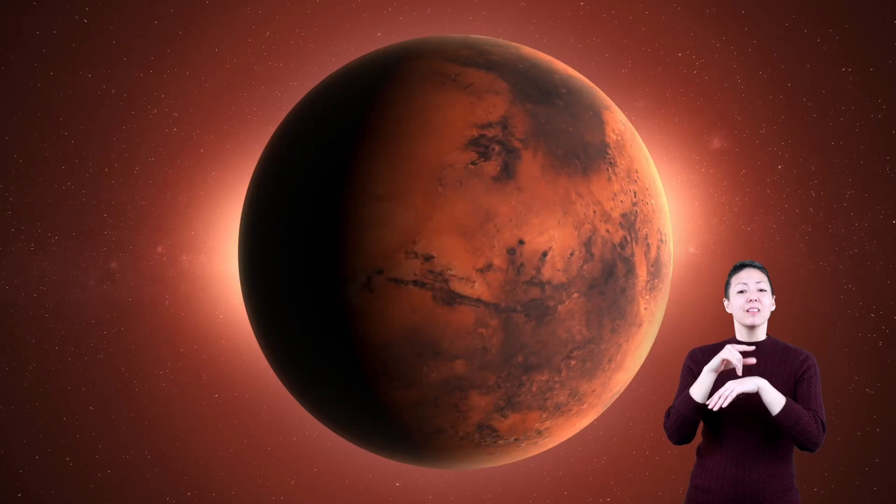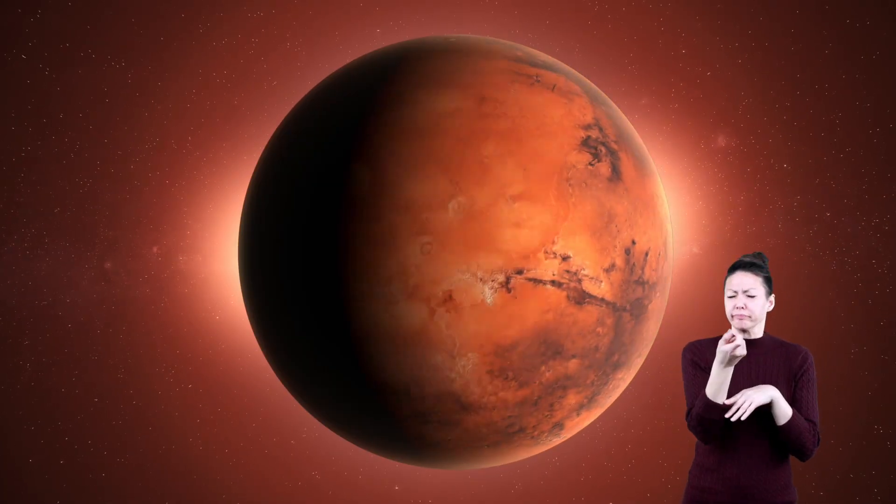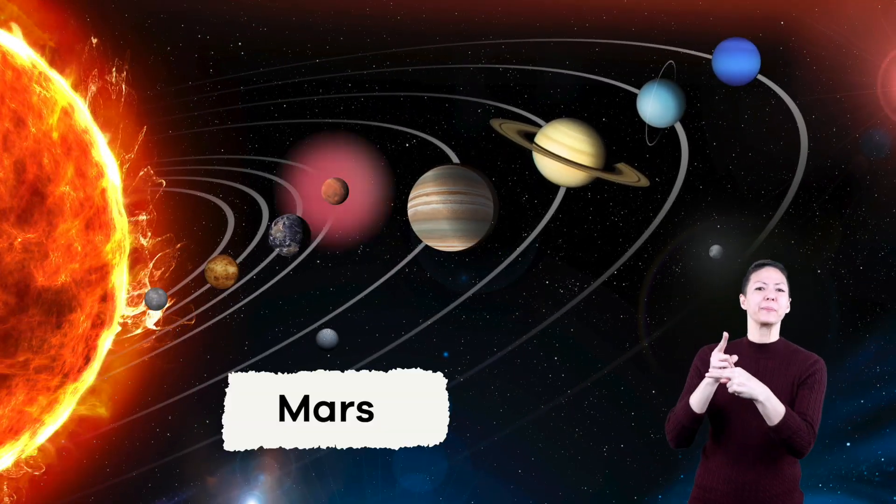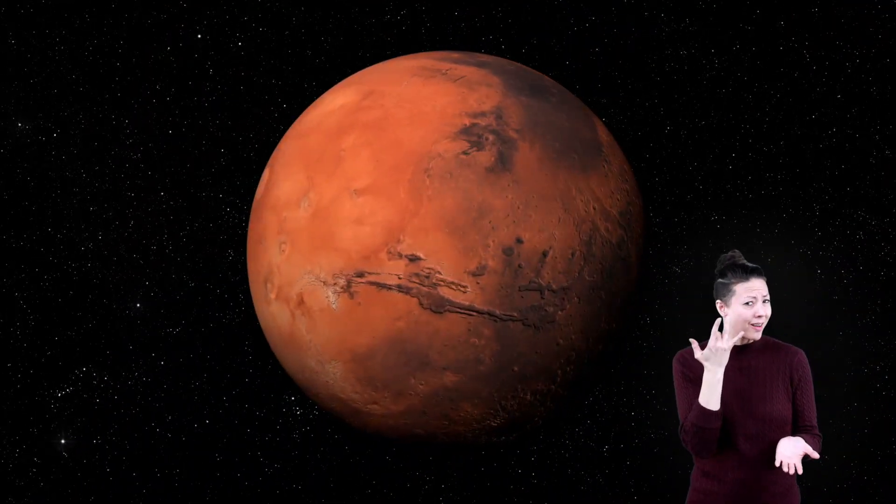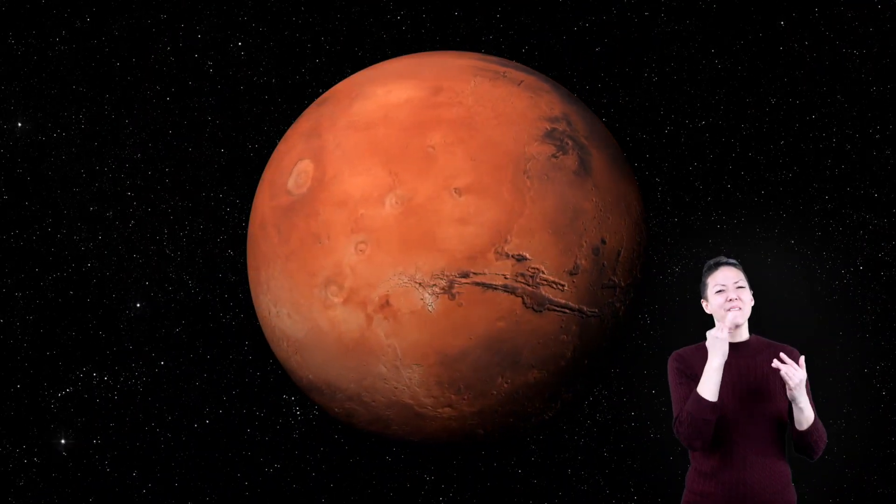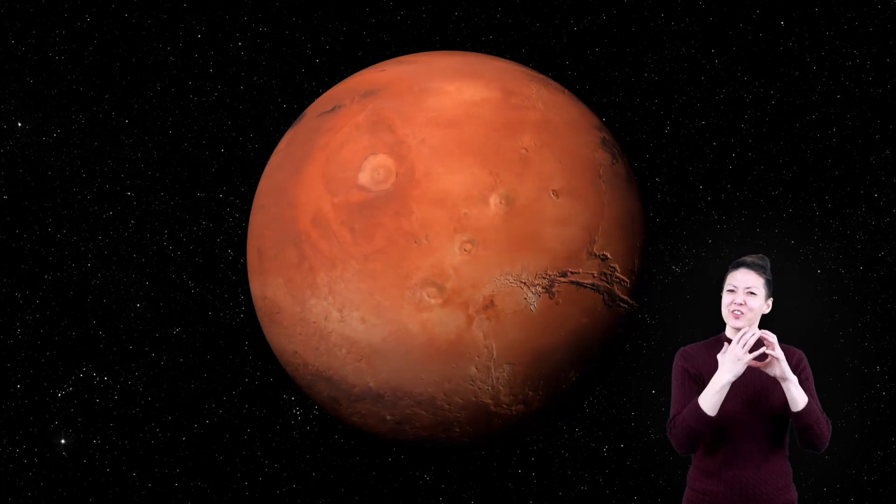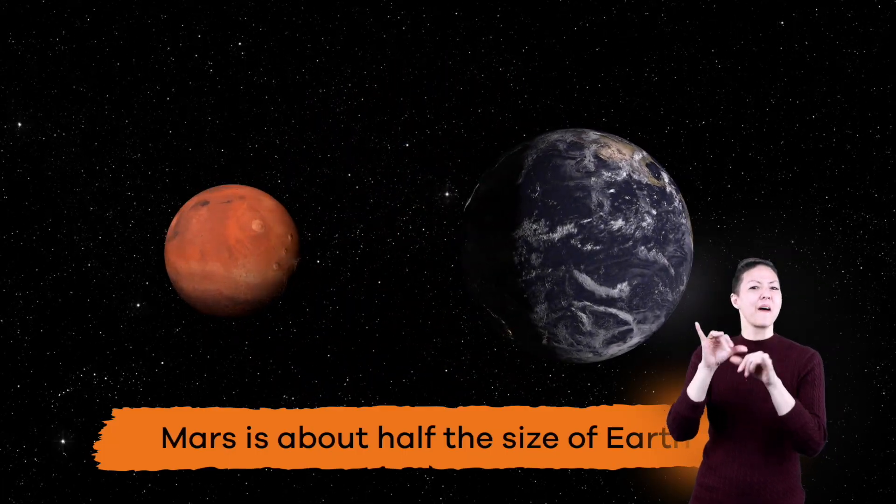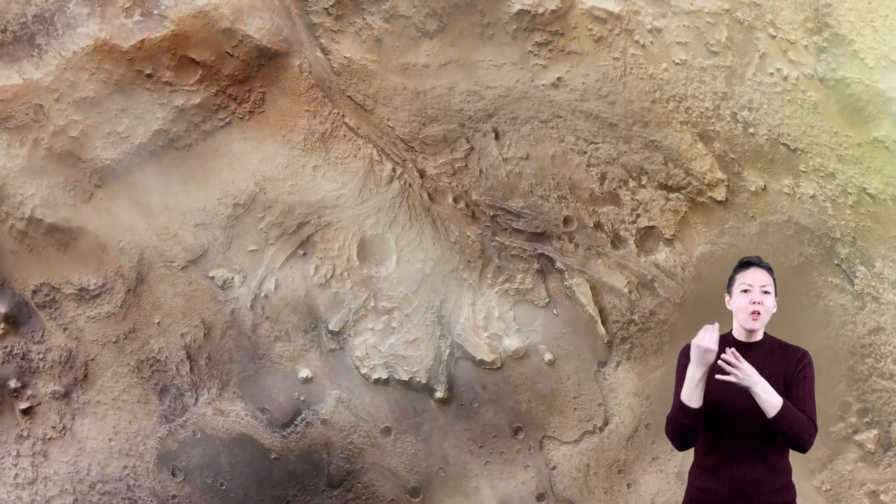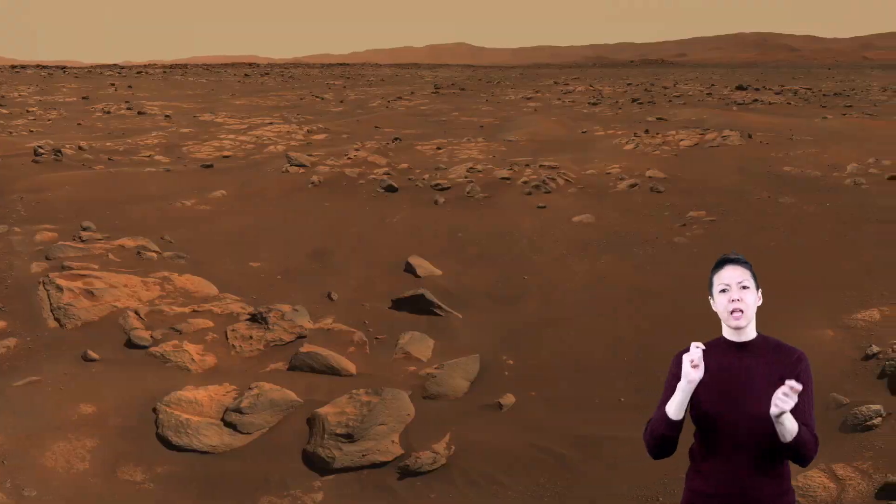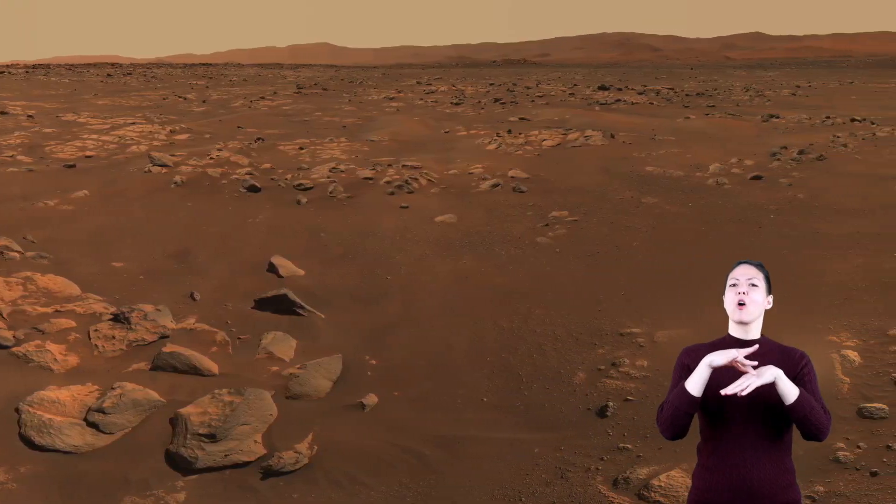Unlike Earth, our next planet has very little water on it, and what water it does have is frozen. Mars has the nickname Red Planet. Can you see why? It gets that name from its rust-colored soil. Mars is about half the size of Earth. Volcanoes, impacts from space debris, wind, and other things have all changed the surface of Mars over time.